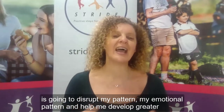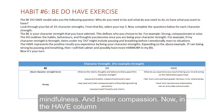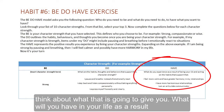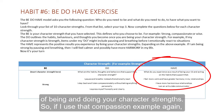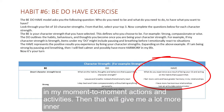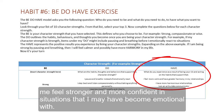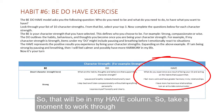In the HAVE column, think about what that's going to give you — what will you have in your life as a result of being and doing your character strength? Using the compassion example again: if I am being compassionate and doing all the habits of what compassion looks like in my moment-to-moment actions, that's going to give me a lot more inner peace, healthier and more harmonious relationships, and make me feel stronger and more confident in situations where I may have become really emotional.